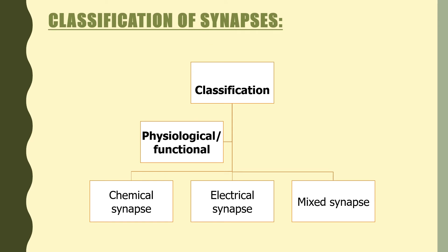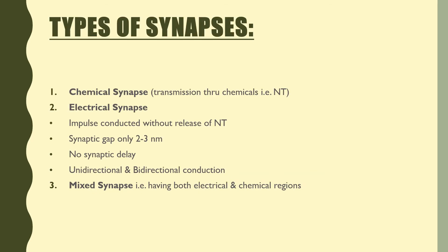Synapses can be classified by physiological/functional classification and by anatomical classification. In the physiological or functional classification there are three types: chemical synapse, electrical synapse, and mixed synapse. Almost all synapses in humans are chemical synapses. Electrical and mixed synapses are present in lower vertebrates or invertebrate animals. We discuss electrical synapses alongside chemical synapses to understand the differences between them.